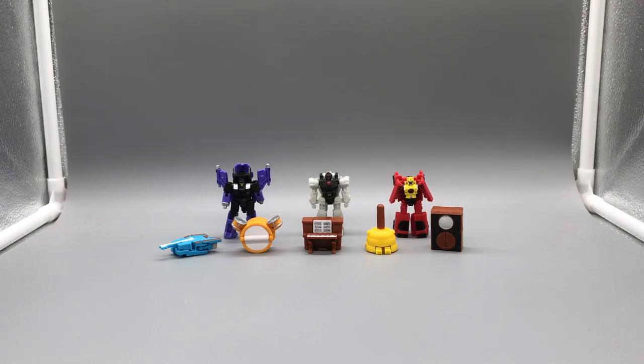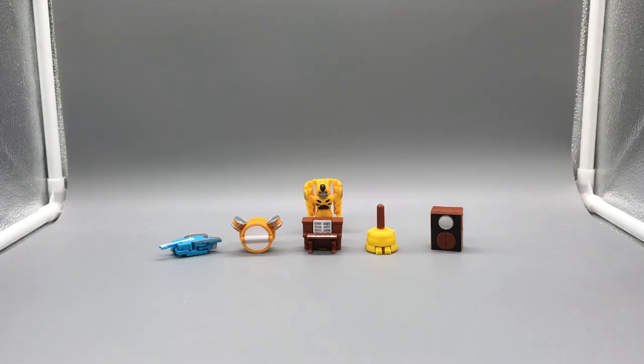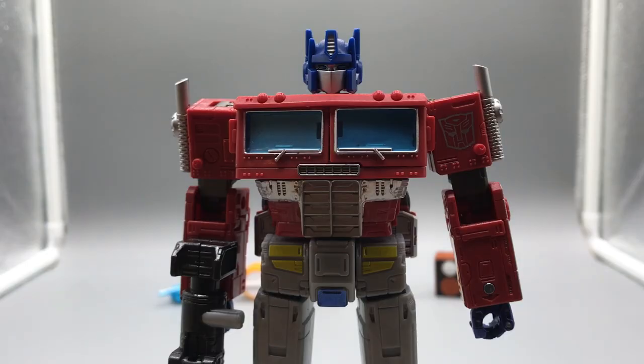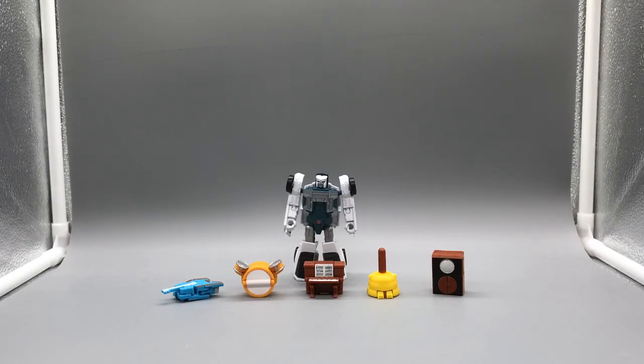Here they are with a couple of current Battle Masters and Micro Masters. A tiny Turbo Changer. A current Deluxe Class and Voyager Class figure. Yes, I realize this is the Earthrise Prime. It's the same size as the other one. This is fine. And a not so current Legend Scale figure.